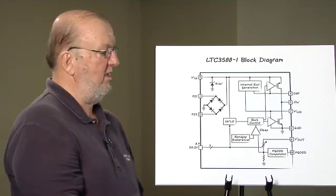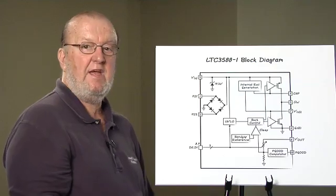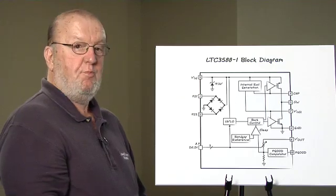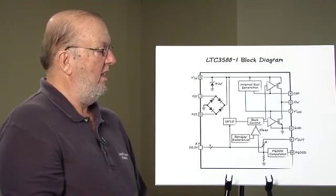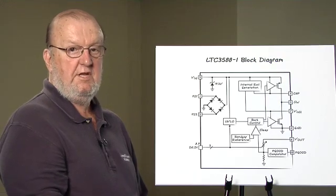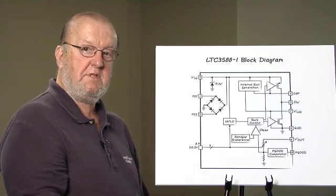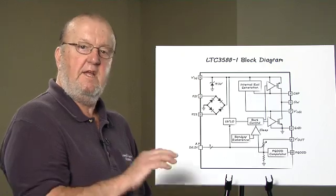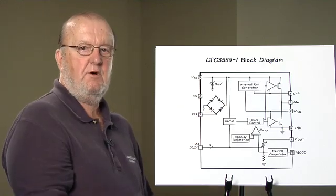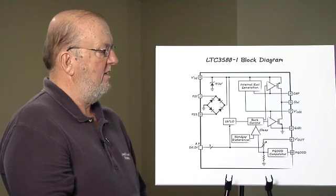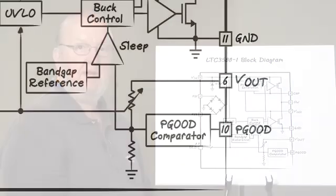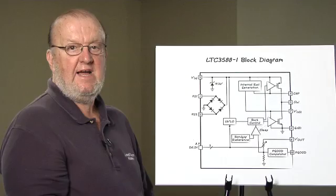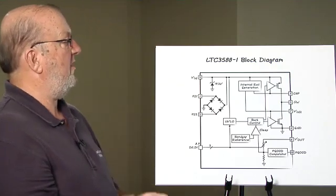When it enters sleep mode, it presents less than 90 nanoamps of output load to the output. The output then starts to decay due to load current or leakage currents. When the output drops slightly below the regulation point, the buck regulator turns back on again and recharges the output storage element. We also have a power good detector. At this point we have a complete energy harvesting system using the 3588.